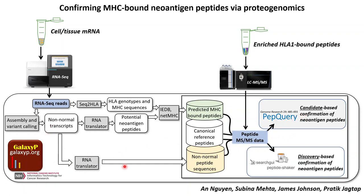We also developed a more open-ended, discovery-based identification where all non-normal transcripts are translated out into all potential non-normal peptide sequences. We then take the mass spectrometry data and try to match these, eliminating the prediction step to keep the approach open-ended — discovering all the different variant sequences bound to the HLA-1 complex.